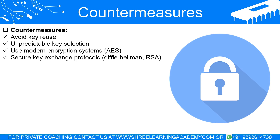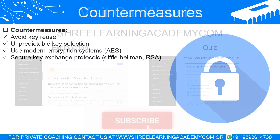Known plain text and known cipher text attacks are powerful strategies used by adversaries to undermine encryption systems. They involve solving for the unknown key using a combination of known data elements. The sophistication and effectiveness of these attacks demonstrate why robust encryption and secure key management practices are vital in the realm of data security. By understanding these concepts, we can better appreciate the intricate game of cat and mouse that characterizes modern cyber security.